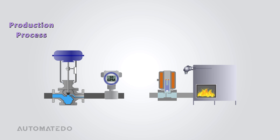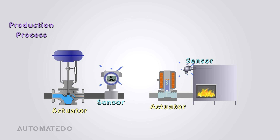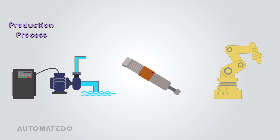The base level of the automation pyramid is the production process. It incorporates actuators and measuring devices known as sensors, enabling interaction with the physical environment. On the factory floor, sensors collect data from production floor variables, while actuators control the movement of machinery, keeping it aligned with desired set points for optimal performance. This level can also include advanced equipment like inverter drives, servo motors, and robots.